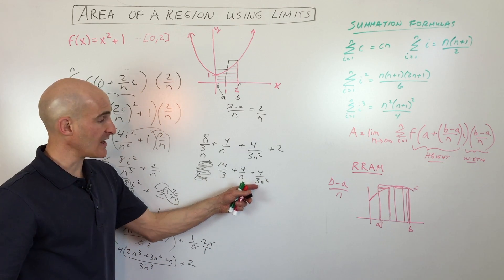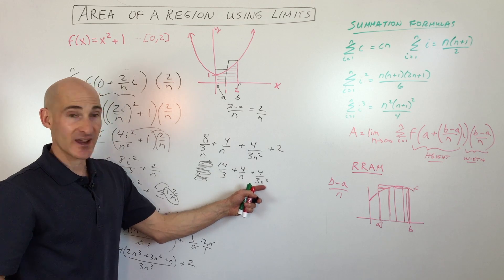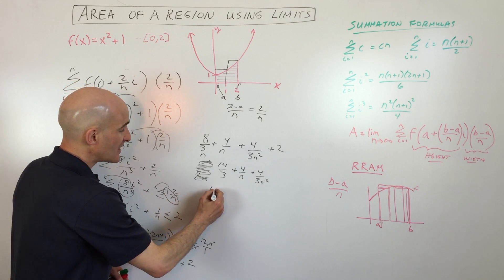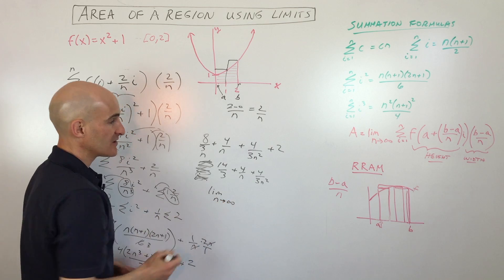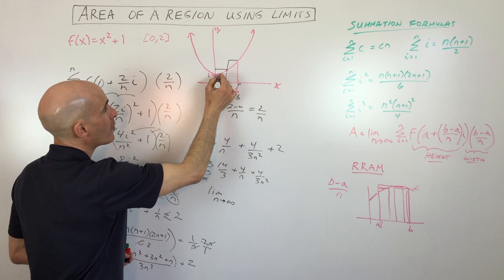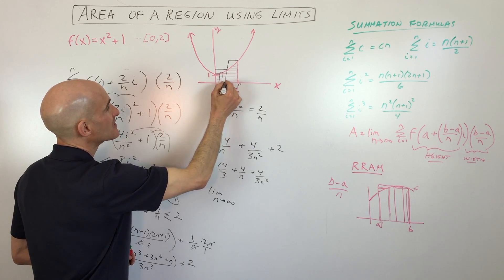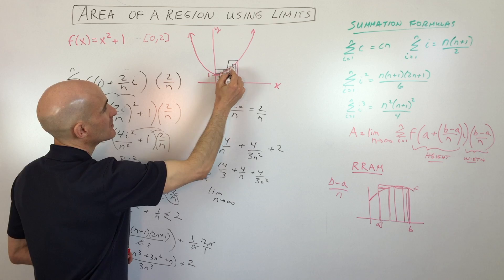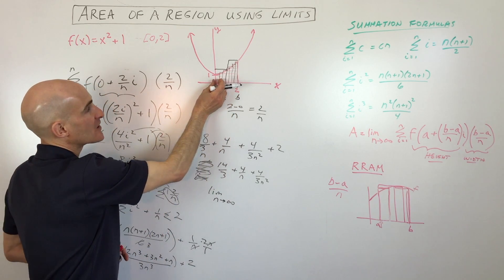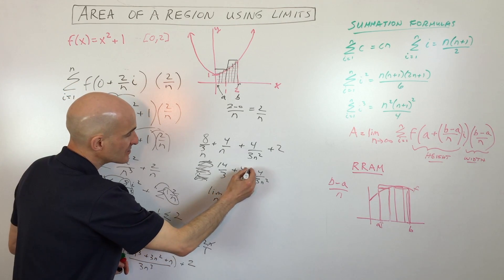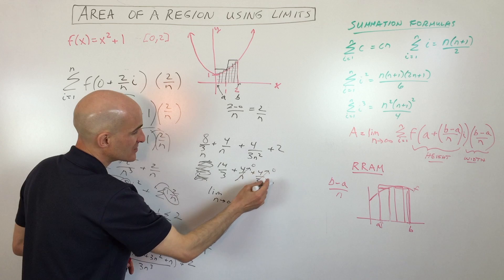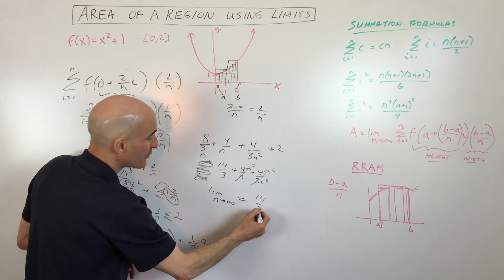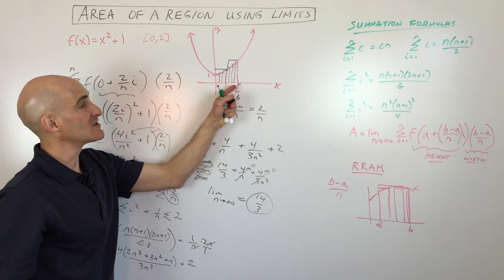Now it depends on what n is — if you have 10 rectangles, n is 10; if you have 100, n is 100. But now we're going to take the limit as n approaches infinity, meaning the rectangles get thinner and thinner and there are more and more of them. As n goes to infinity, the four over n term goes to zero, and four over three n squared goes to zero because you're dividing by n squared. So we're left with exactly fourteen thirds. This is the exact area underneath this parabola between zero and two.